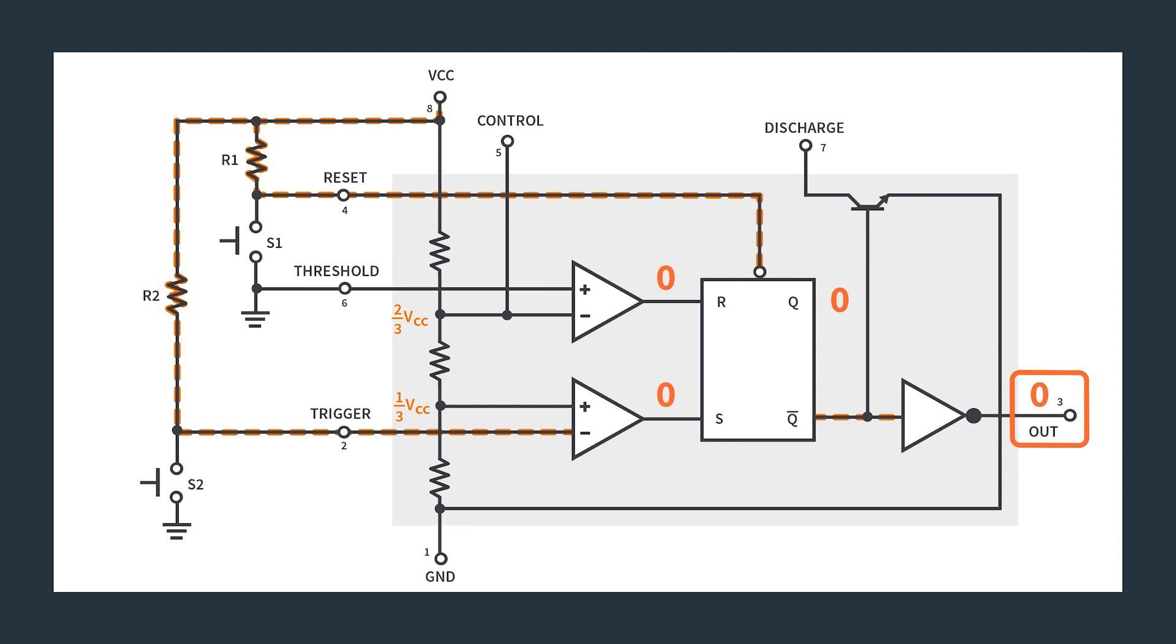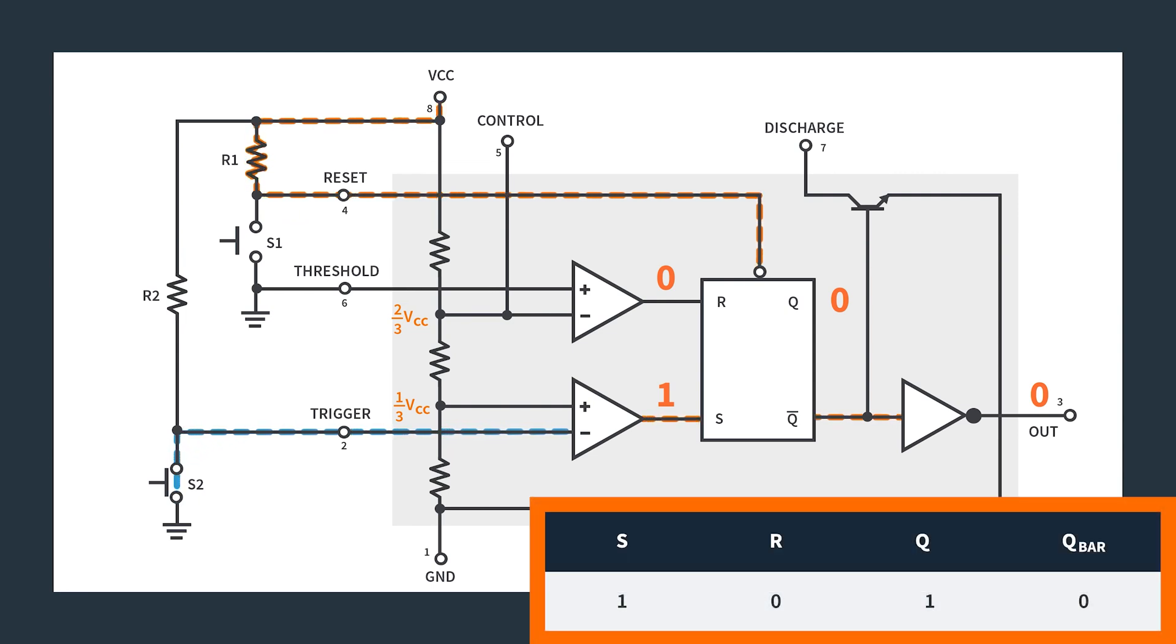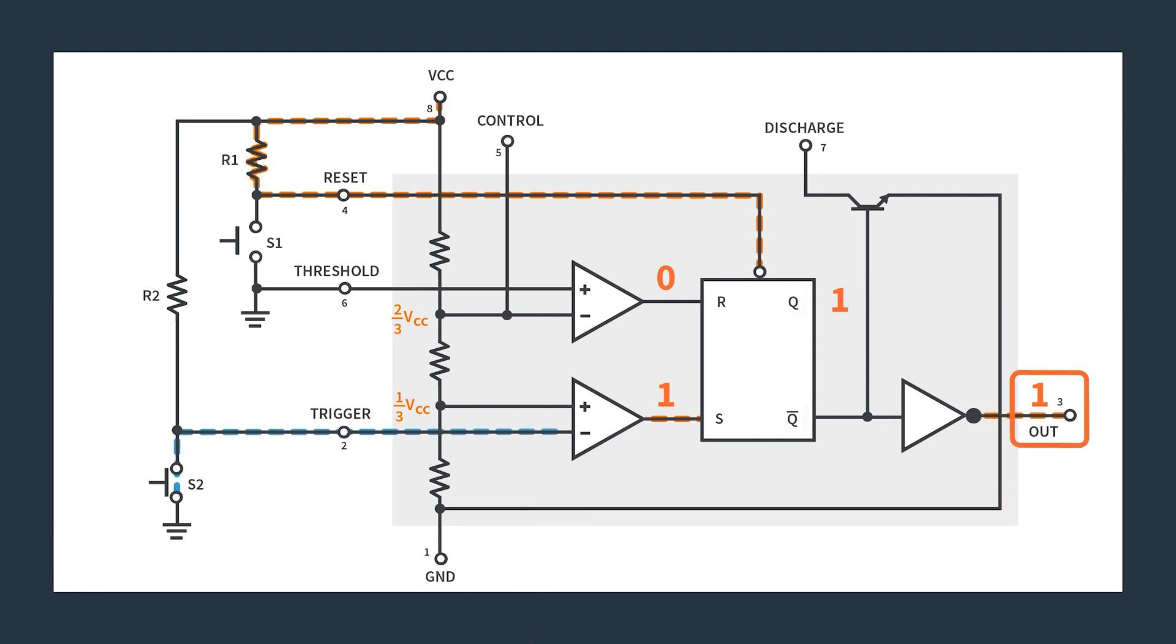But what happens if we push a button? If I push switch two and connect the input to the inverting part of the comparator through switch two, I'm going to drop that voltage down to zero. Suddenly, that will be a lower voltage than my non-inverting input on the comparator, and I will output a high voltage going into S. Looking at the truth table of our SR flip-flop, if you have a one on S, a zero on R, suddenly Q goes high, Q-naught goes low, and you have this output that flips a signal and you get a high.